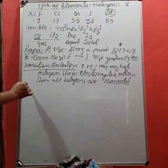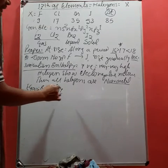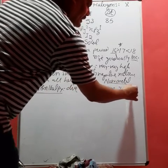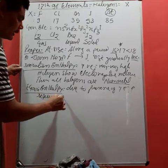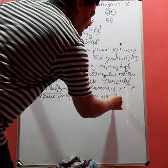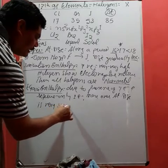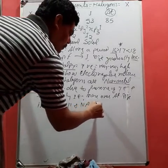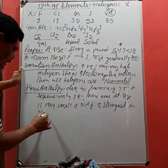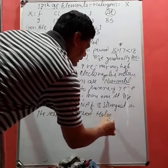Next is electron gain enthalpy. Due to presence of seven electrons and requiring only one electron more, and atomic size is very small, nuclear attraction force is strongest in the respective period.